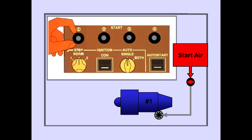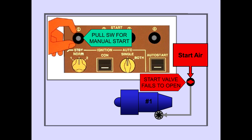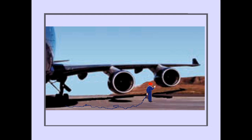If the start valve does not open during start, a manual override start may be required. During a manual override start, the malfunctioning valve is opened and closed by the ground crew while in close communication with the flight crew.